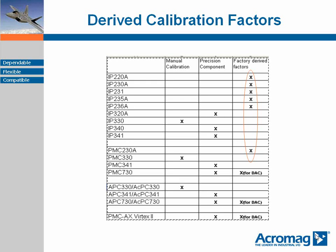In the case of analog output boards, the board is programmed to output a series of expected values during the final test process. The recorded output is used to compute a set of correction factors which are written into each board. These factors can be overwritten by the customer with some effort, but it is not recommended.